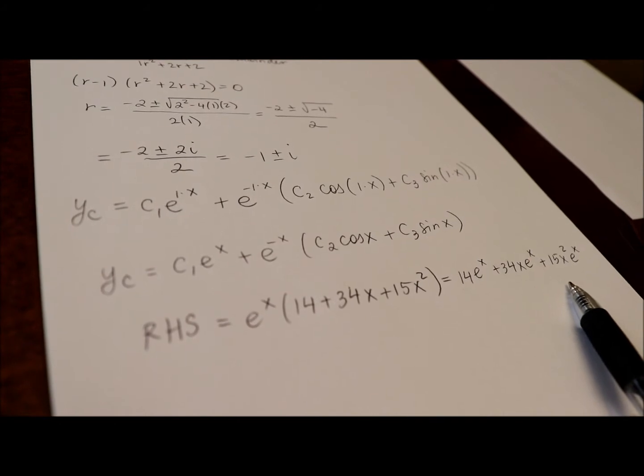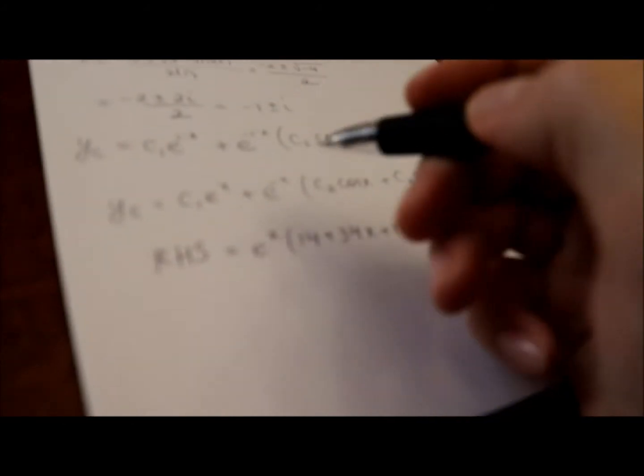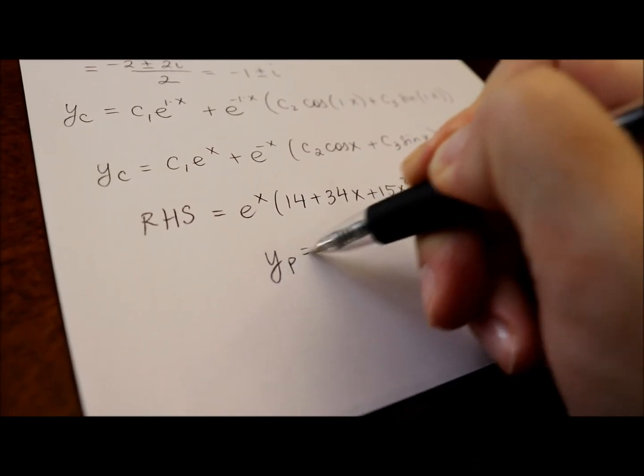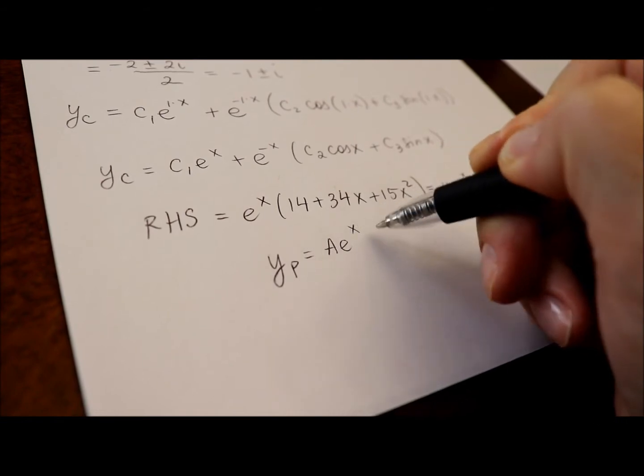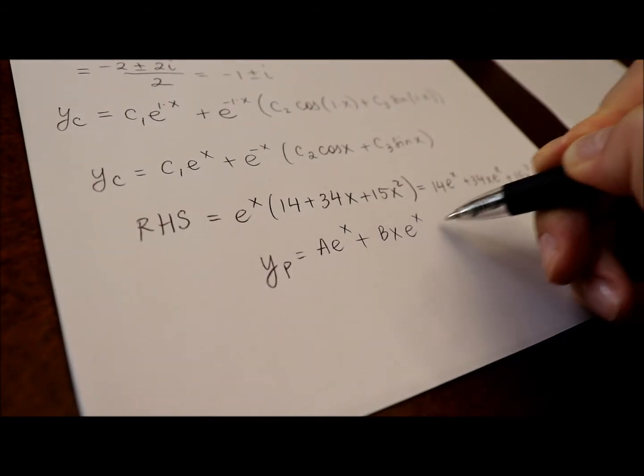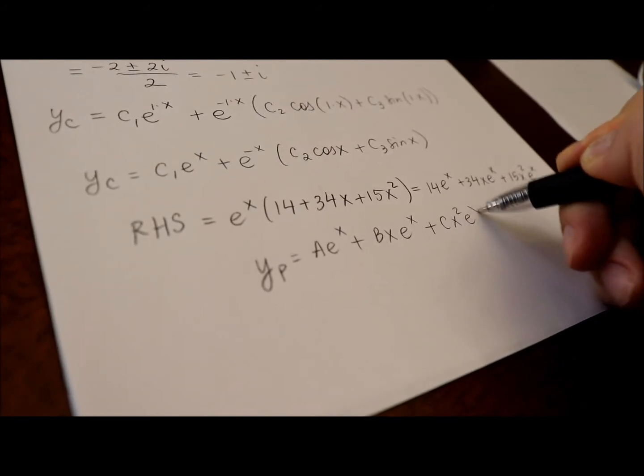Don't forget, you will have to use the product rule. So making an educated guess for a particular solution will give me y particular equals a e to the x, plus b x e to the x, plus c x squared e to the x.